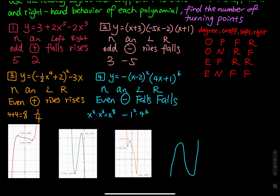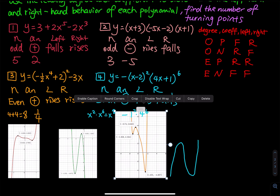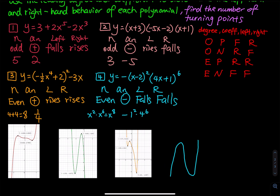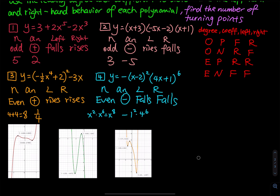For the last graph, this one rises to the left and rises to the right. But for number 4, it should be falls to the left and falls to the right. I think there is a mistake because I changed the function at the last minute right before making this video, so that graph is no longer correct. Use Desmos to verify that it falls to the left and falls to the right.